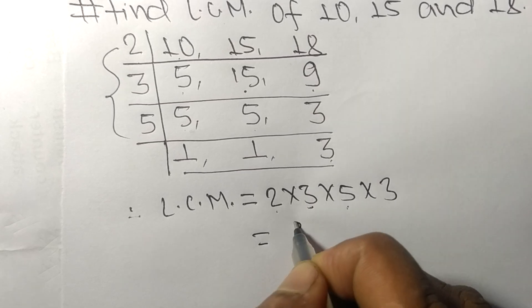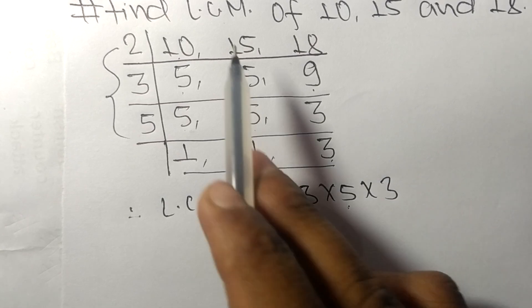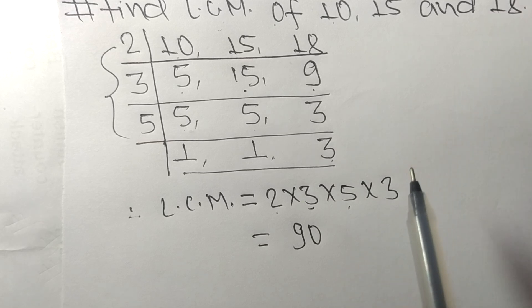So 90 is the LCM of 10, 15, and 18. So this much for today and thanks for watching.